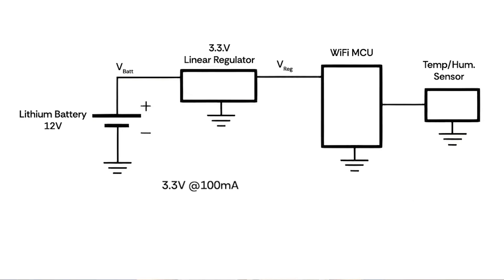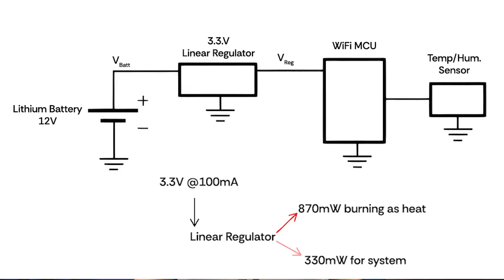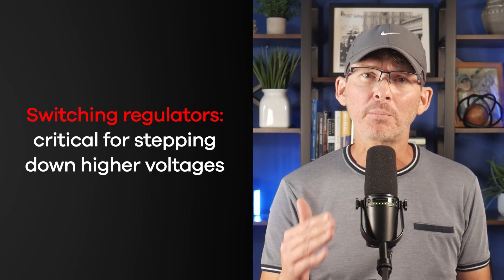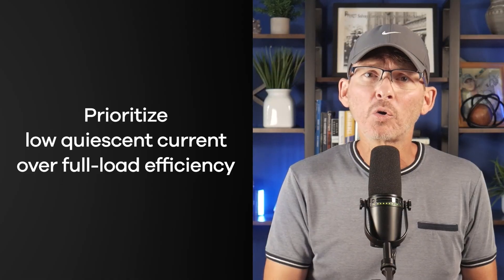But now imagine using a 12V supply instead. That same 3.3V load at 100mA means the regulator is burning 870mW as heat with only 330mW actually going to your system — less than 30% efficiency. This is why switching regulators are so critical when stepping down from higher voltages. A good buck converter can easily hit 85 to 95% efficiency across a wide range of loads. Even in low current designs, the regulator's quiescent current matters — some linear regulators draw hundreds of microamps just to stay alive, which can be more than your microcontroller uses in deep sleep. Always match your power supply strategy to your input voltage and system behavior.